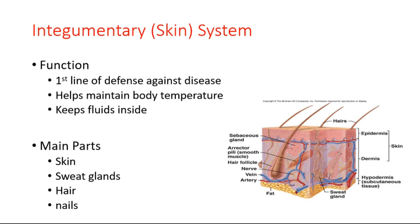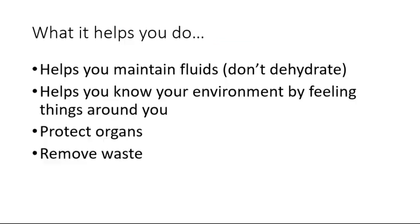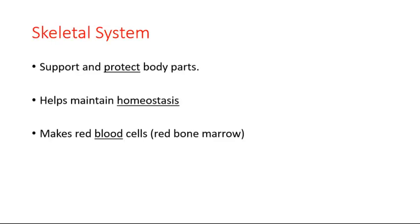We're going to talk about the integumentary skin system. The function, which is the first line of defense against disease, helps maintain body temperature and keeps fluids inside. The main parts are the skin, sweat glands, hair, and nails. It helps you maintain fluids — meaning not to be dehydrated — helps you sense your environment, protect organs, and remove waste by sweat.